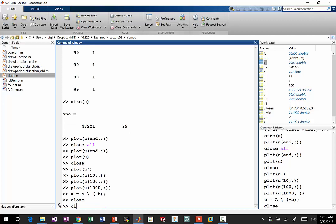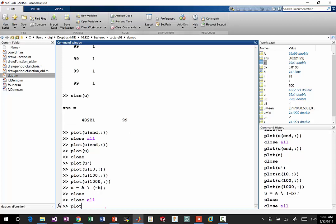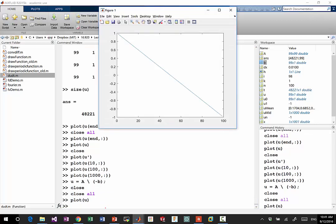If I plot U, I get the same thing. So that's how we solve elliptic equations. Question? Only in the case that you're interested in the final steady state. Only when I'm interested in the final steady state, exactly. So that's what characterizes elliptic equations.